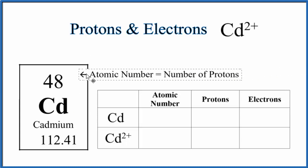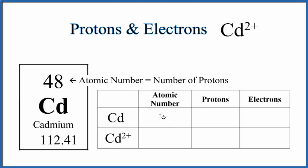So when it's neutral, we look at the atomic number, that's 48, so we can write that in, 48. And the atomic number for cadmium, same as the ion, 48.